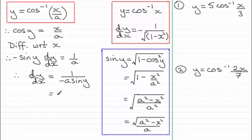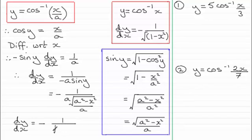So if I substitute this into here, we end up with minus overall, and then we end up with 1 all over a times the square root of a squared minus x squared, and that's divided by a. The a's cancel out, and that leaves me with this standard result: dy/dx equals negative 1 all over the root of a squared minus x squared.